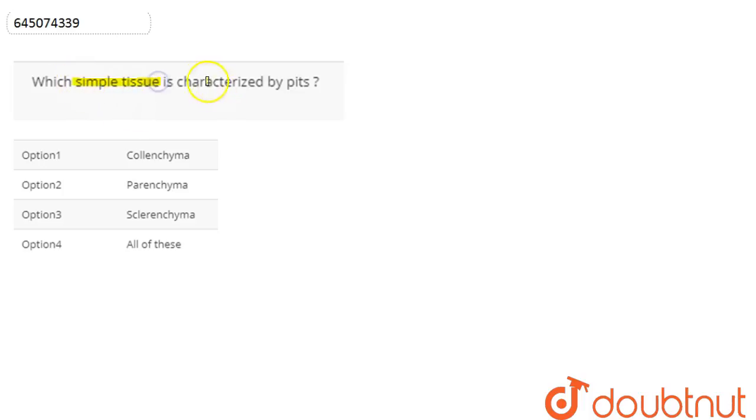In this question we are asked which simple tissue is characterized by pits. There are basically three simple permanent tissues: parenchyma, collenchyma, and sclerenchyma. Out of which parenchyma and collenchyma are living tissue, whereas sclerenchyma is the dead simple tissue.